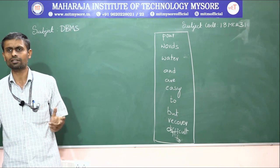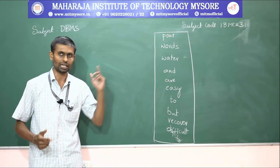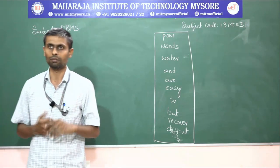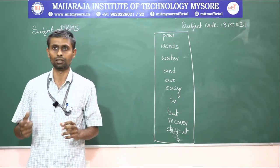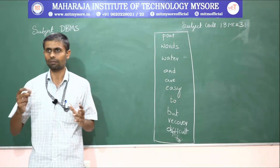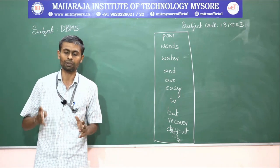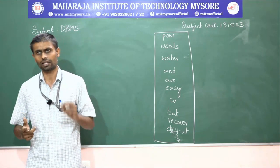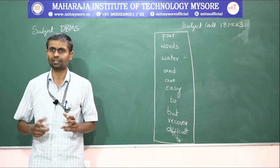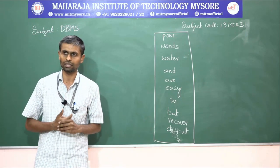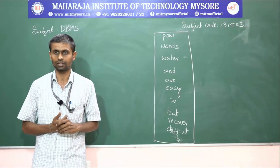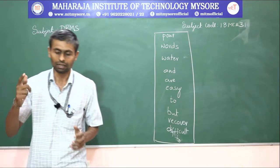Students will understand how to develop a database application by learning this DBMS subject. The course outcomes are: at the end of the course, the student will be able to demonstrate the fundamentals of data models, conceptualize the database system, make use of ER diagrams, summarize SQL and relational database design, illustrate transaction processing, concurrency control techniques, and recovery in database applications, and infer database design in the real-world entities.